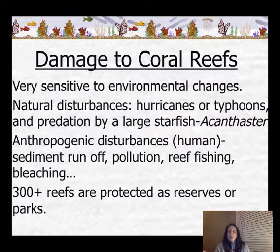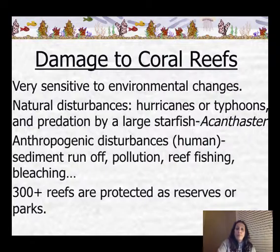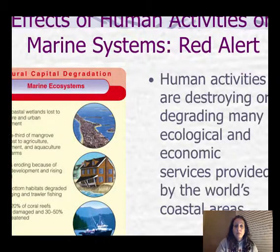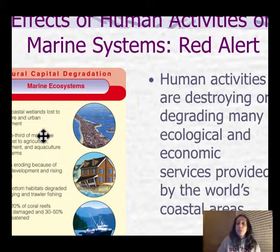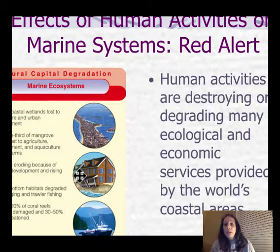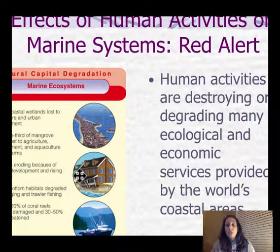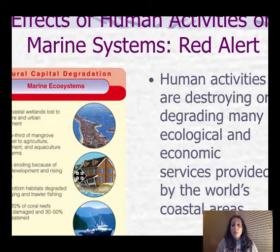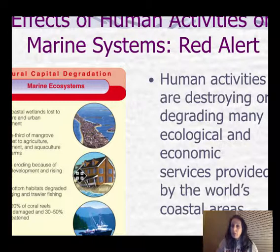This can also be the result of too much CO2 in the atmosphere from runoff, pollution, or reef fishing. In your textbook and on the website you can find information about human activities and the natural capital being degraded from coral reefs — the economic and ecological services provided by these marine systems and what's happening as a red alert. I'd suggest picking two to three examples that you can memorize and explain for the AP exam.